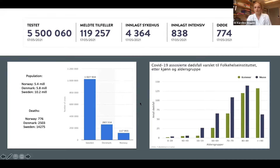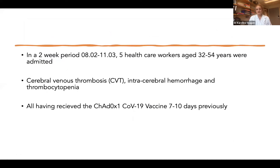Before we move on to the patients, I'd like to show the bar chart on the right-hand side, which shows the distribution of deaths according to age group — number of deaths on the x-axis and age group on the y-axis. The five cases we encountered were in the lower age groups. In this two-week period from 8th of February to 11th of March, we had five healthcare workers aged 32 to 55 years admitted to our center.